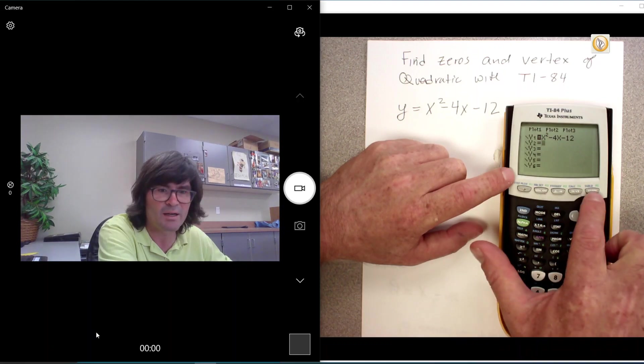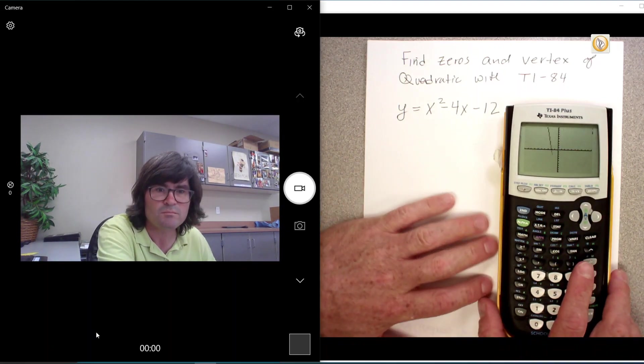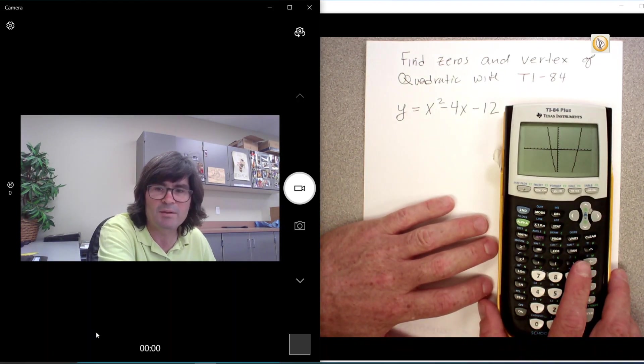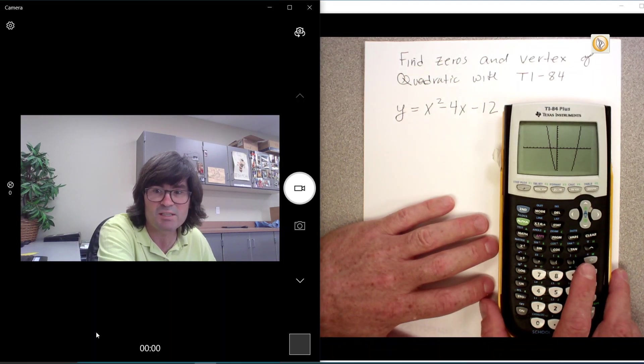Anyway, we type this in. I'm going to push graph. So there's my parabola. Unfortunately I missed some of it on the bottom, so I need to adjust my window so I can see the entire parabola.